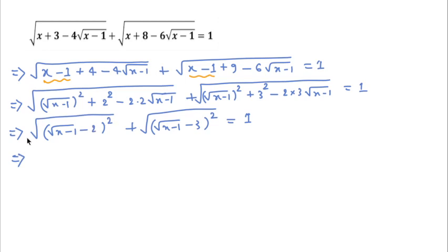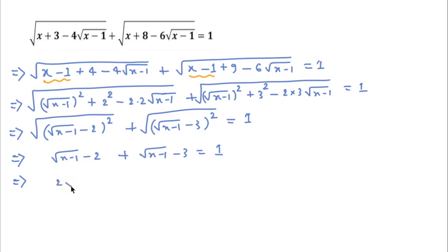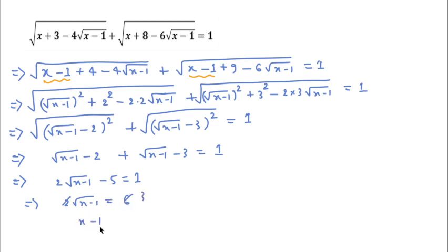Now the square and the root cancel, giving (√(x−1) − 2) plus (√(x−1) − 3) = 1. Adding these gives 2·√(x−1) − 5 = 1, so 2·√(x−1) = 6, then √(x−1) = 3. Squaring both sides gives x − 1 = 9, so x = 10.